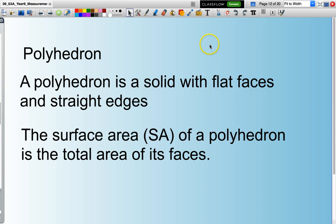Now we will be dealing with basically prisms. A polyhedron is a solid with flat faces and straight edges. The surface area of a polyhedron is the total area of all its faces.